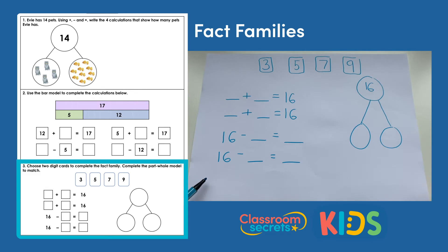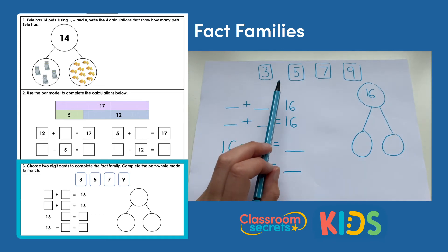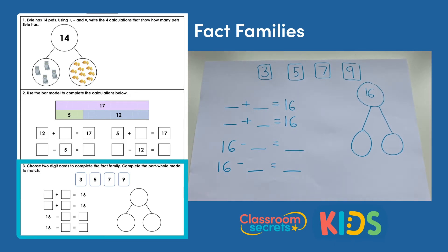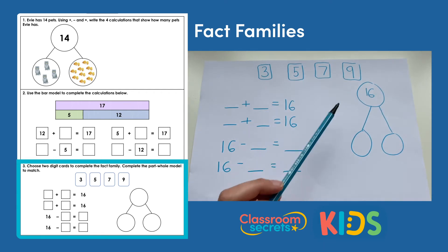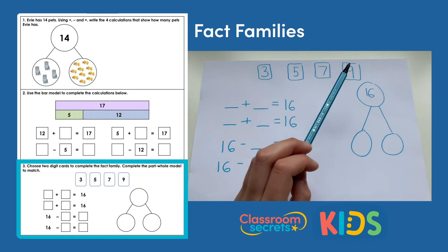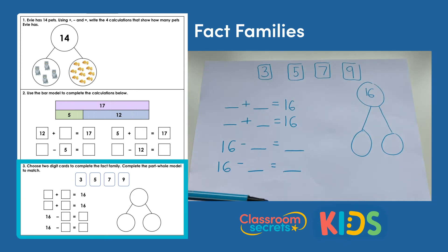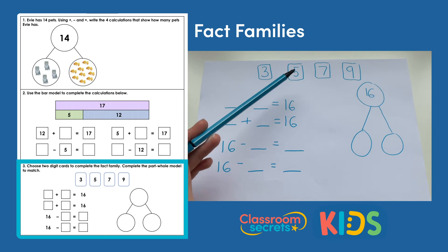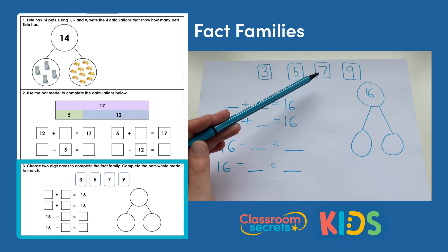We need to pick two numbers from above that make 16. It can't be three and five because that makes eight, and seven and three is a bond to ten so it can't be those two. Let's start with a larger number — let's try nine. Nine and three: counting on from nine gives twelve — no. Nine and five: counting on gives fourteen — no. So it must be nine and seven: nine, ten, eleven, twelve, thirteen, fourteen, fifteen, sixteen — yes, nine and seven makes 16.